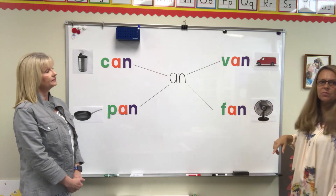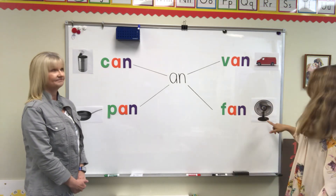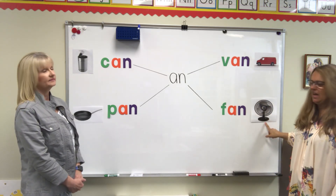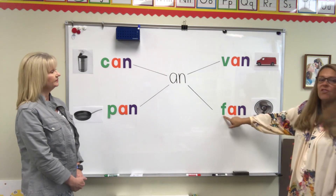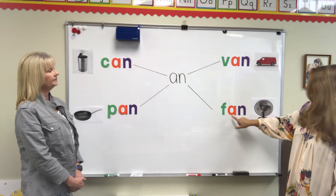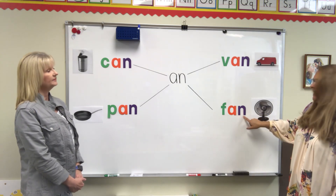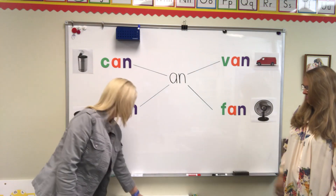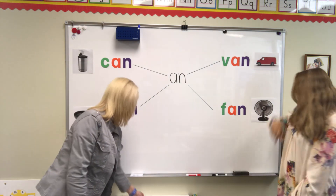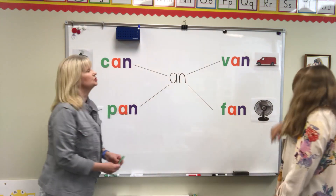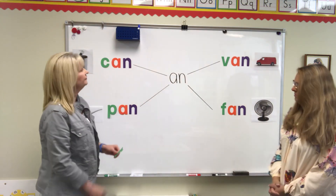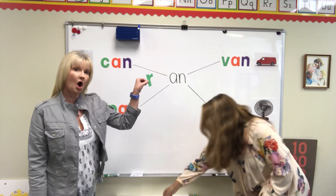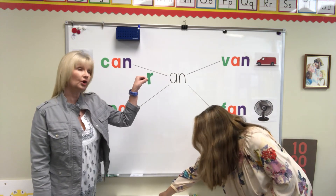And next we have a picture of a fan: F-A-N. Fan. And we can add other letters to the AN family. If I add an R, we have a word all on its own.